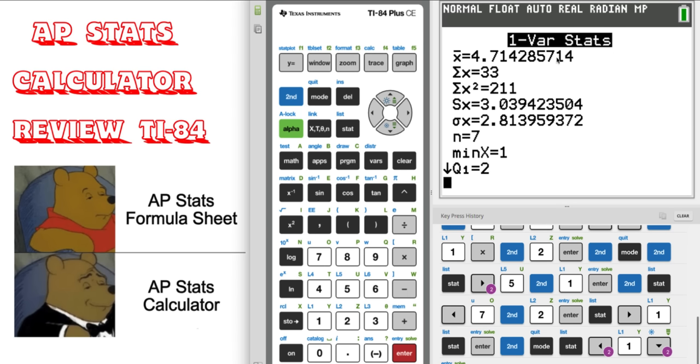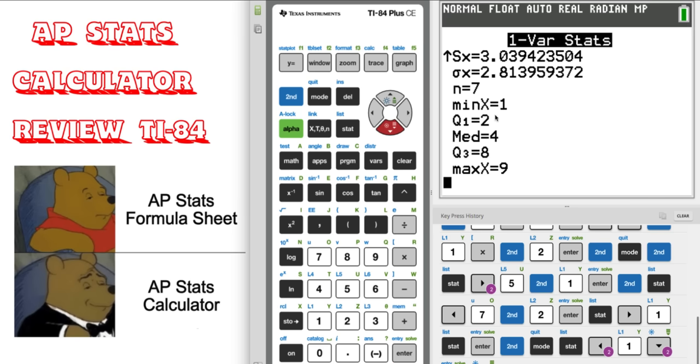You choose calculate and look at all these stats that come out. So the first one is X bar. That's the mean, obviously, right? We know that. And then we have the sum and the sum of the squares all the way down. We have the standard deviation S of X. And if you scroll down, you will have the five number summary, which is important for making a box plot.